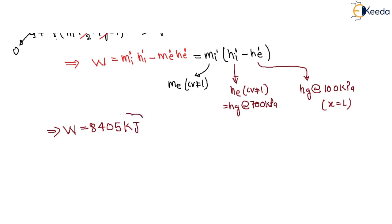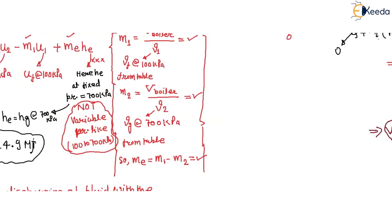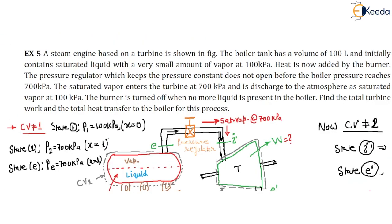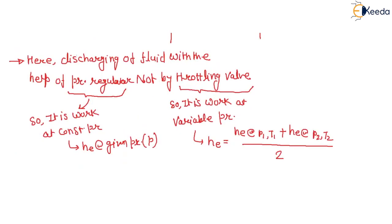This is a very important question asked in the IES exam — a conventional question. Always keep in mind there are two control volumes in this type of problem.